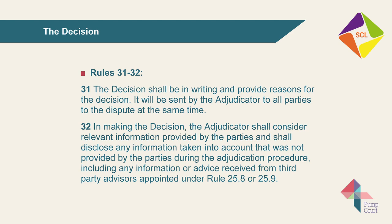The adjudicator now comes to make his decision. The overall three-month limit applies: a decision made after that would fall outside the adjudicator's jurisdiction. That three-month deadline is a backstop — adjudicators are encouraged to expedite the procedure wherever possible and deliver their decision at the earliest opportunity. Under rules 31 and 32, the decision should be in writing and provide reasons. The adjudicator must take into account relevant information and also disclose information that was not taken into account and which was not provided by the parties. Where evidence is not provided by the parties, natural justice issues may arise, and an adjudicator will naturally want to give the parties an opportunity to comment.